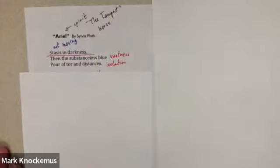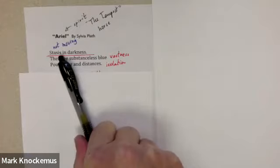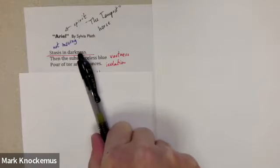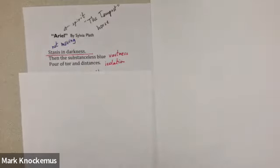So the poem opens up with the sentence: stasis and darkness. What do we see here? Stasis means something is static, it's not moving, and in darkness. That's a strong image of just a void, just nothingness, no movement, no light, nothingness.